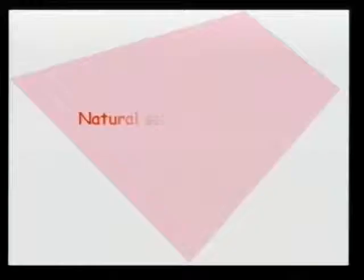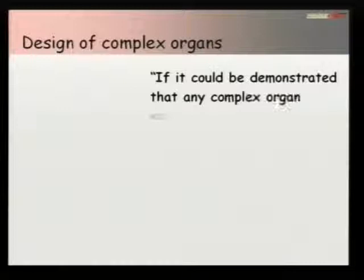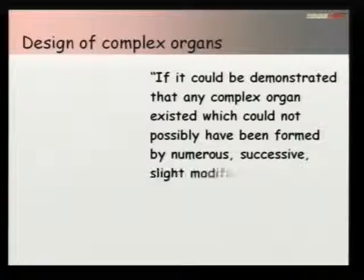Let's look at an example that Dawkins picks up on: natural selection and the eye. This is a very well-known argument in creationist circles that comes up time and again. Charles Darwin himself said: 'If it could be demonstrated that any complex organ existed which could not possibly have been formed by numerous successive slight modifications, my theory would absolutely break down.' So he recognized the problem, and he recognized the eye was one of those problems.